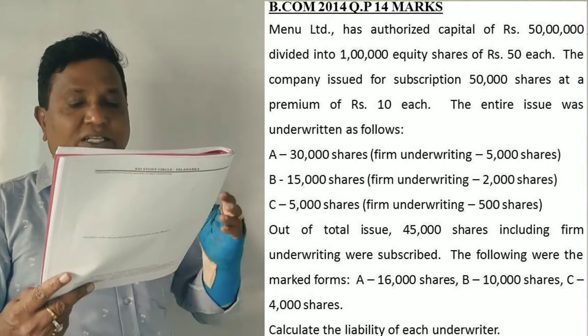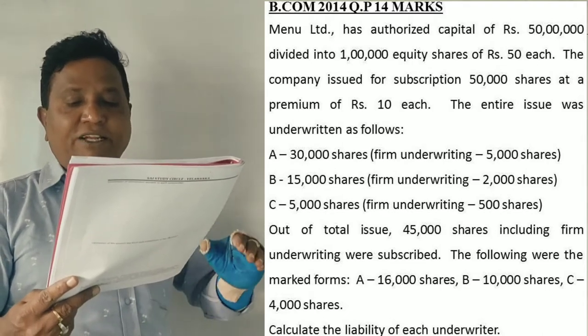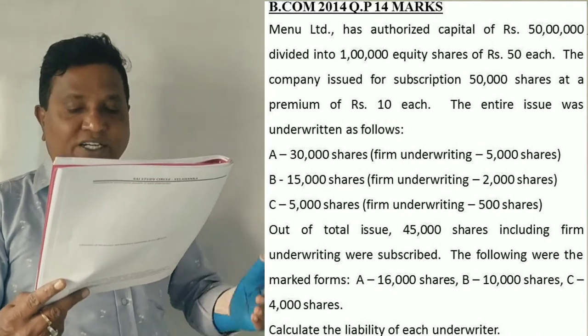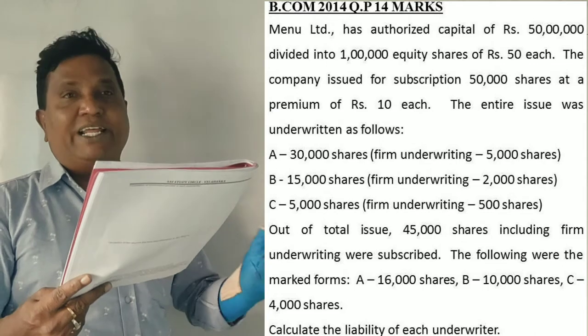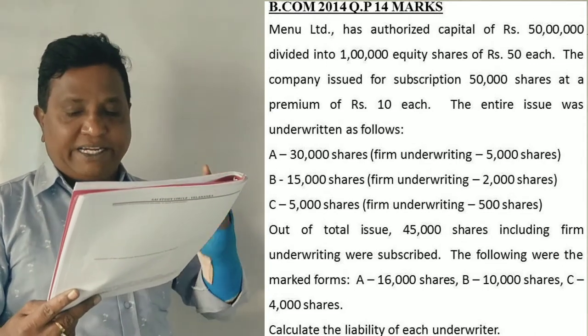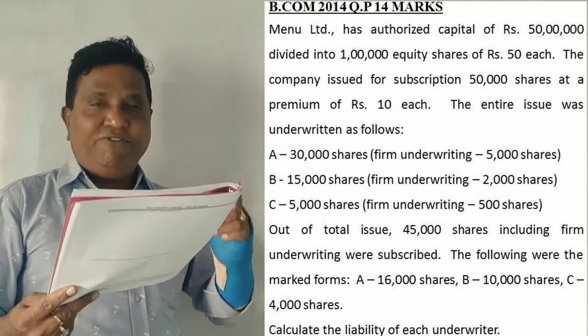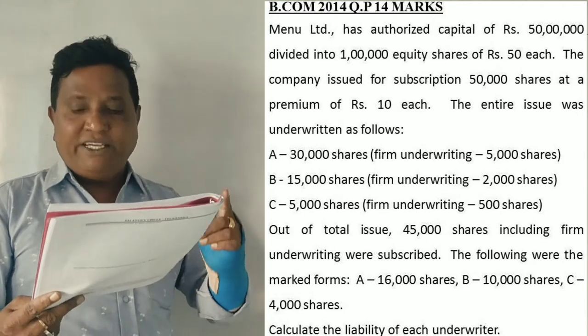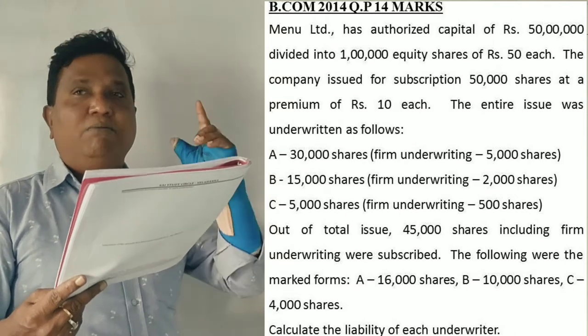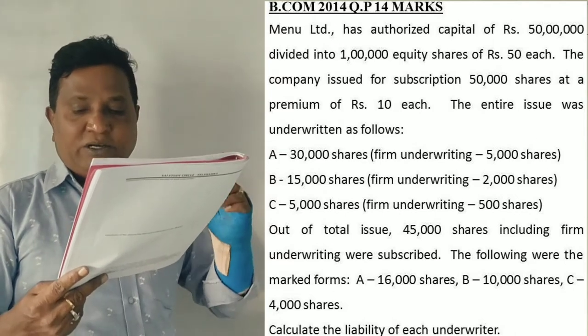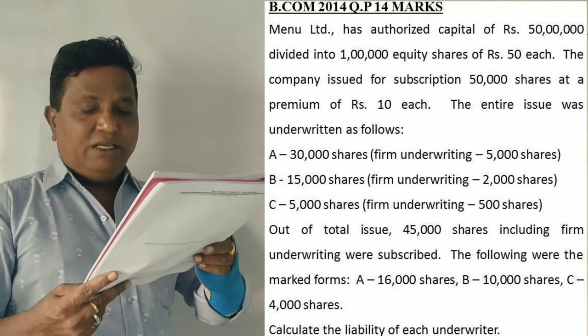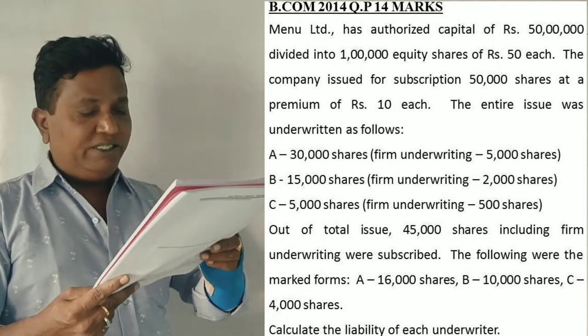ABC: 30,000, 15,000, 5,000. Firm underwriting: 5,000, 2,500. Out of total, 45,000 shares including firm underwriting. Please underline including firm underwriting. That is 45,000. Firm underwriting and market applications. 16,000 marked A, 10,000 B, 4,000 C.